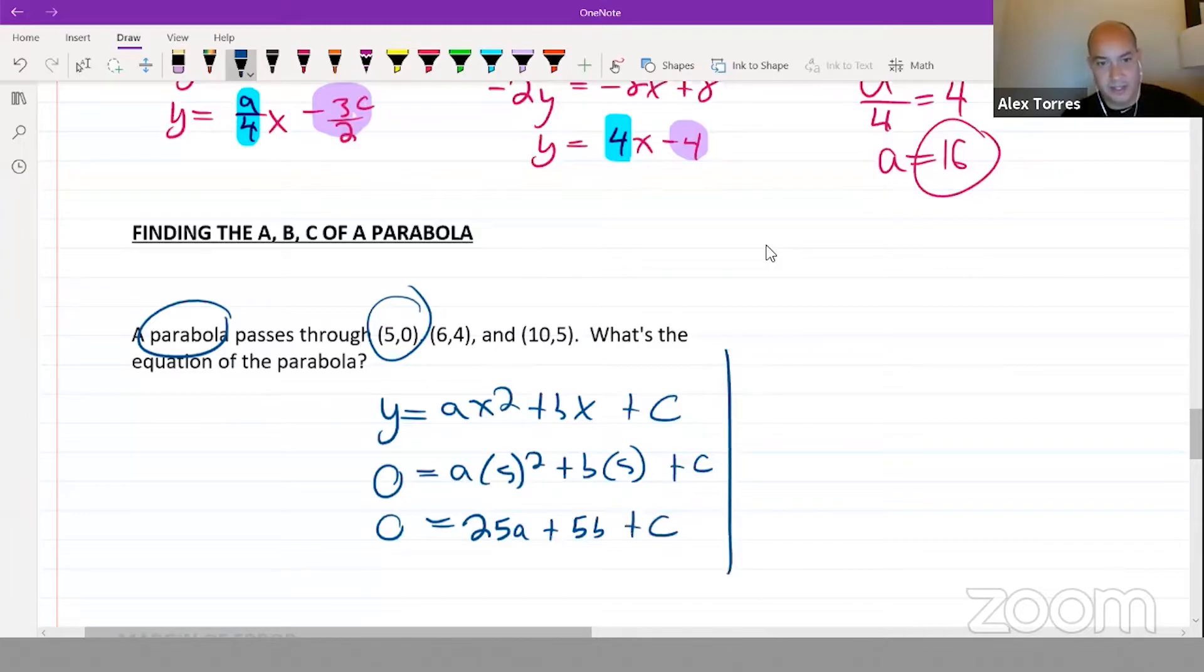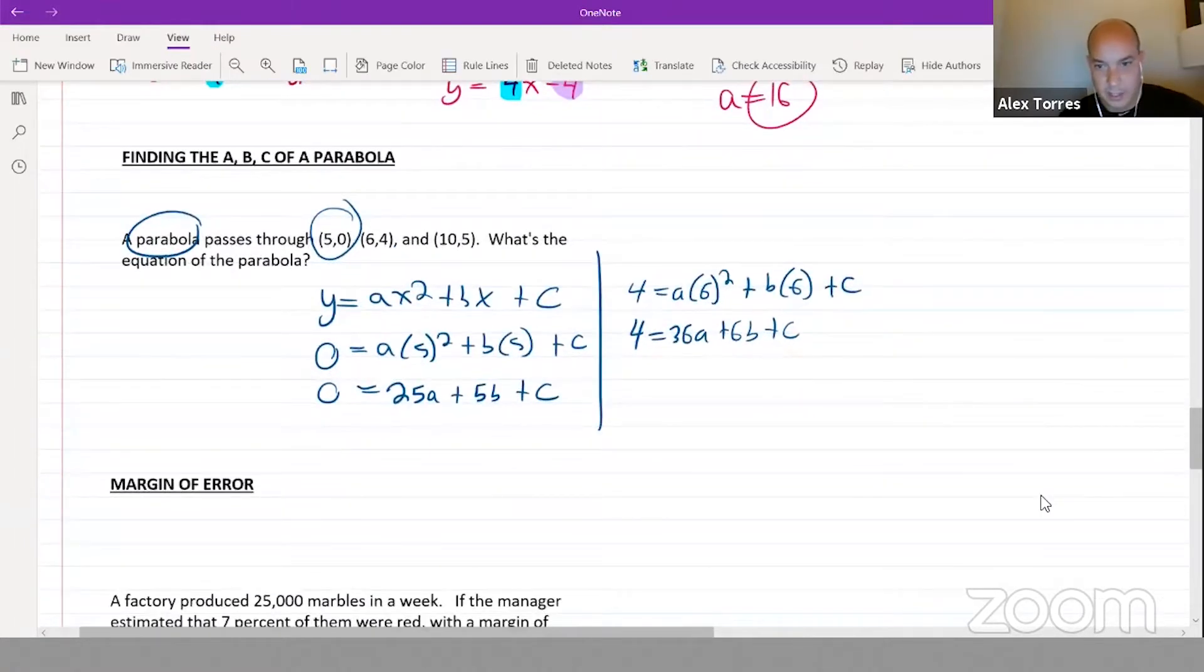Then we can plug in the next point, (6,4). Four equals a times six squared plus b times six plus c, which simplifies to four equals 36a plus 6b plus c. And then for the last one, we've got five equals a times 10 squared plus b times 10 plus c, simplifying to 100a plus 10b plus c.